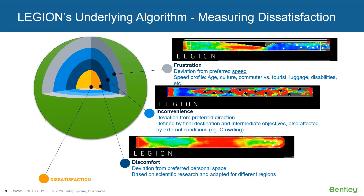The science behind Legion was first developed by an associated research organization called the MAIA Institute. MAIA stands for Multi-Agent Intelligent Adoption. Legion uses an agent-based microscopic pedestrian simulation approach. This means that every person in the model is treated as an individual entity with specific behaviors rather than generic behaviors.